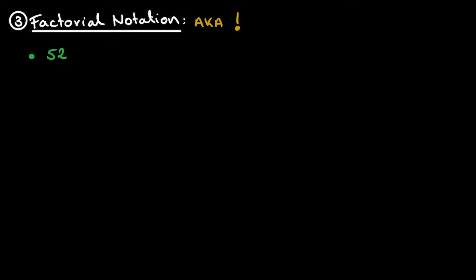And this brings us to the factorial notation. If you've done any combinatorics, you've probably come across this one — it's basically the exclamation mark. If you have a deck of cards with 52 cards and wonder in how many ways you can shuffle it, that would be 52 factorial — meaning 52 times 51 times 50 all the way to 1. This number is roughly 8 times 10 to the 67th power, meaning there are more ways to shuffle a simple deck of cards than there are atoms in the entire earth. So 52 is a pretty small number — let's go bigger.